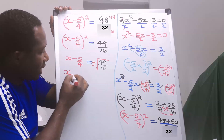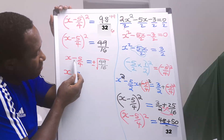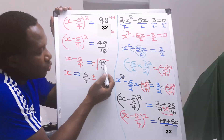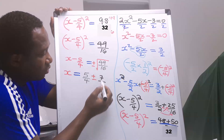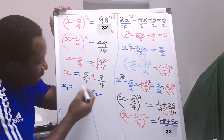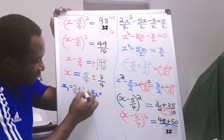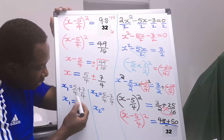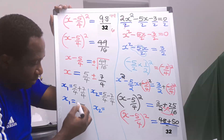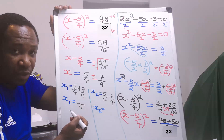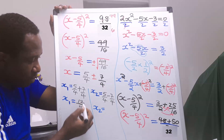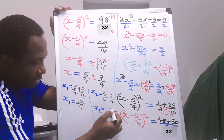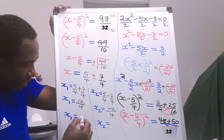Now, our aim is to make x the subject. This minus 5 over 4, on the other side, will become 5 over 4. The square root of 49 is 7, and the square root of 16 is 4. For x1, we have 5 over 4 plus 7 over 4. For x2, we have 5 over 4 minus 7 over 4. Since the denominators are the same, x1 equals 12 over 4, which is 3. And x2 equals minus 2 over 4, which is minus 1 over 2.